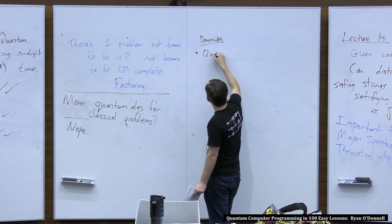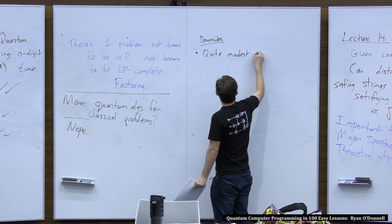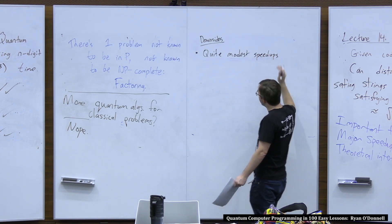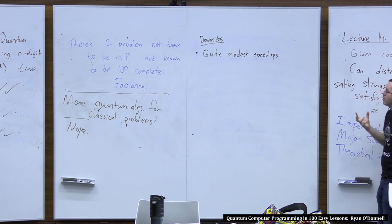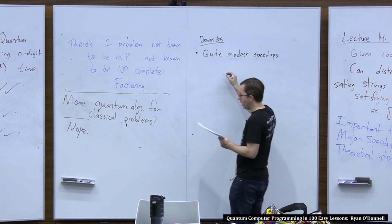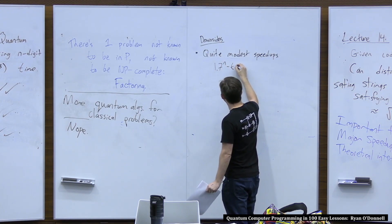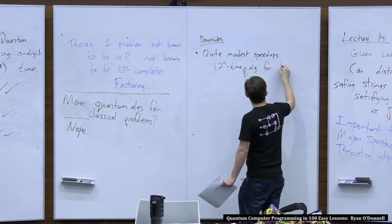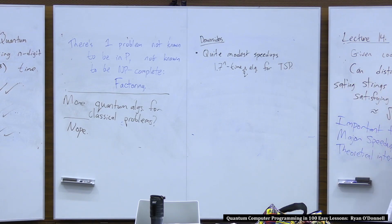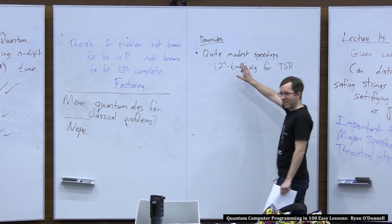One issue is that they're very modest speedups. One thing that people work on — which I think is good to work on, but it's not so amazing — is trying to squeeze square root type speedups in different contexts. Where can we use Grover-type ideas to get speedups for interesting problems? For example, pretty recently there was a 1.7-to-the-n time quantum algorithm for the traveling salesperson problem, whereas the fastest classical algorithm we know is 2-to-the-n time. So it's not even 1.4-to-the-n, but it's a speedup for a famous problem.